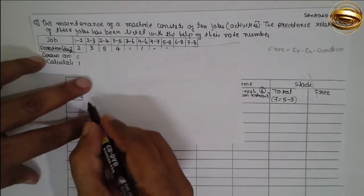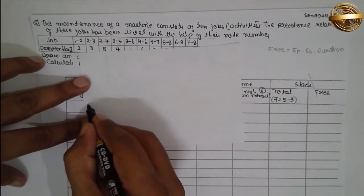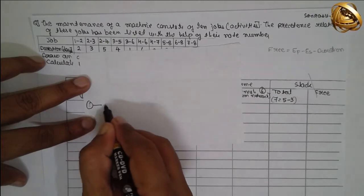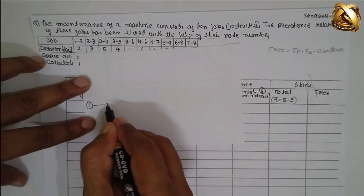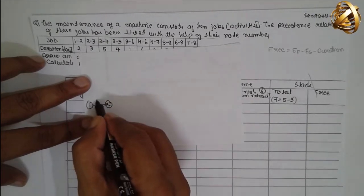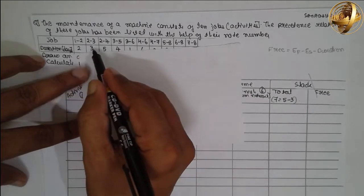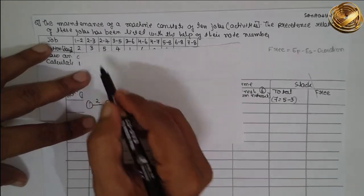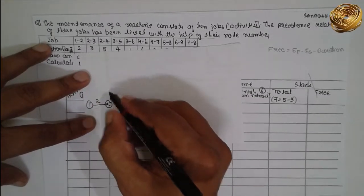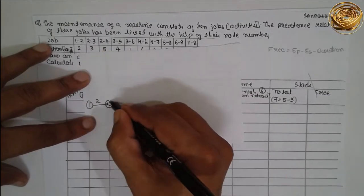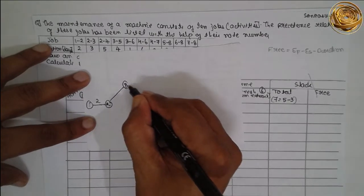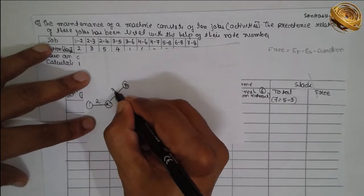Write here node 1 to 2; duration is 2. Next, 2 to 3; duration is 3.